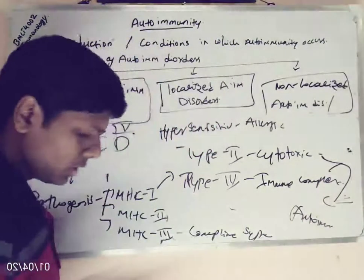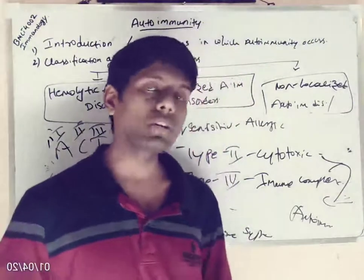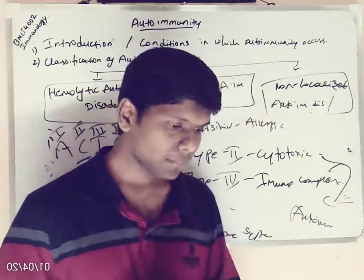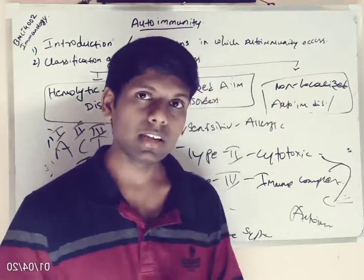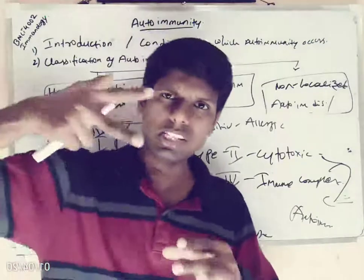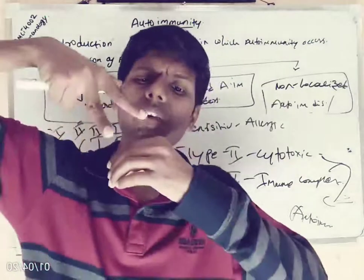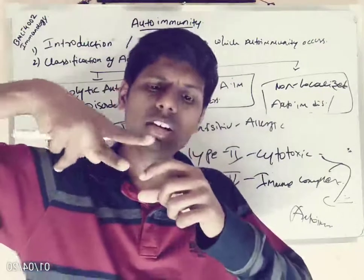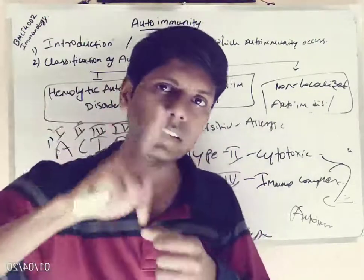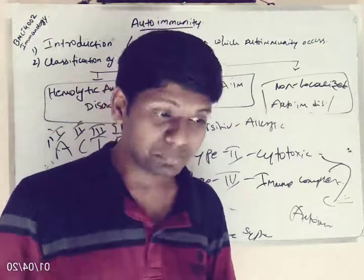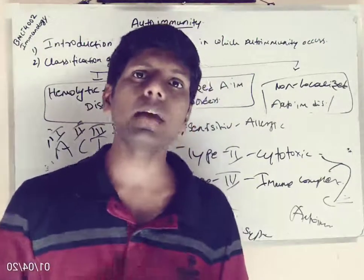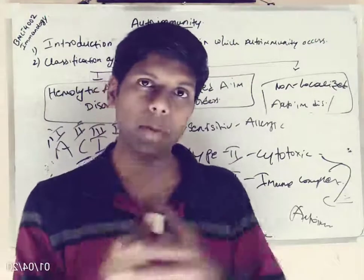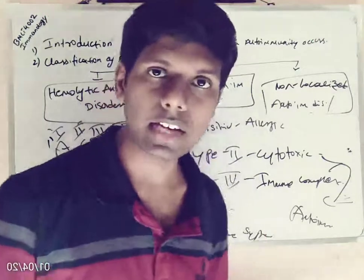A best example of an autoimmune disorder is type 1 diabetes mellitus. In type 1 diabetes, the immune system starts killing our own pancreatic cells — the Islets of Langerhans — resulting in type 1 diabetes mellitus. Type 1 diabetes mellitus is an autoimmune disorder caused by genetic variations in the pancreatic Langerhans cells.